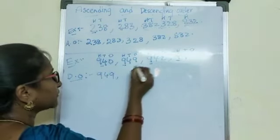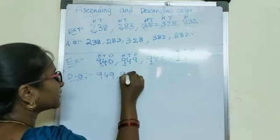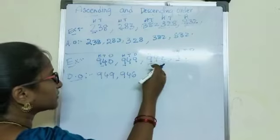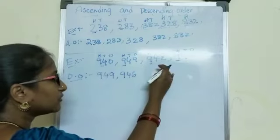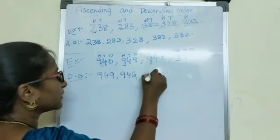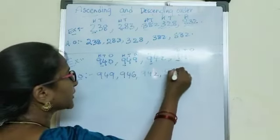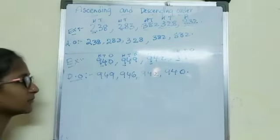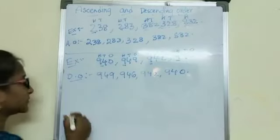Then after 9 we have 6 — so 946. After 6, the bigger one between 0 and 2 is 2 — so 942. Last, I have 940. Yes or no, children? Yes.